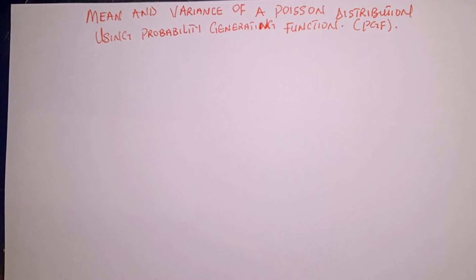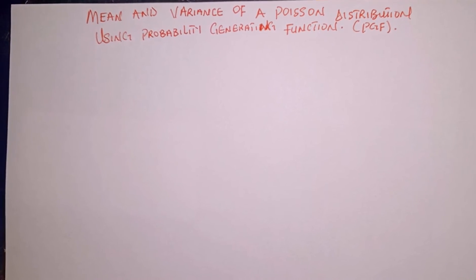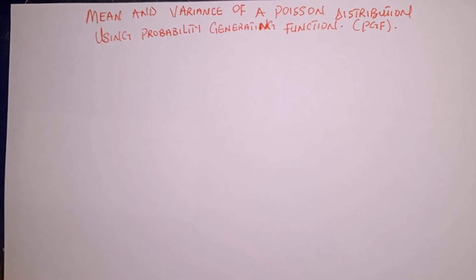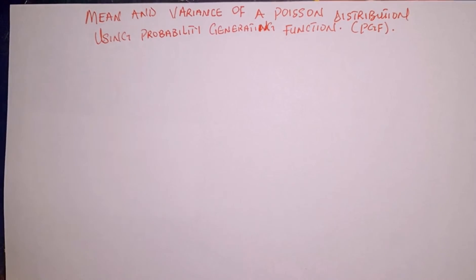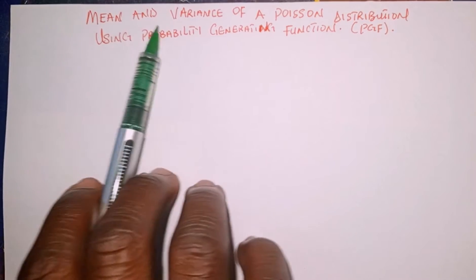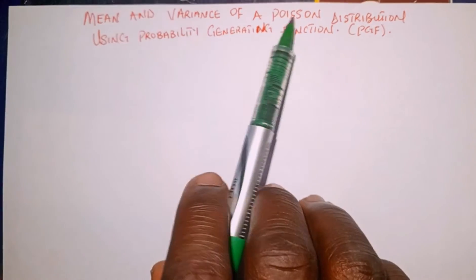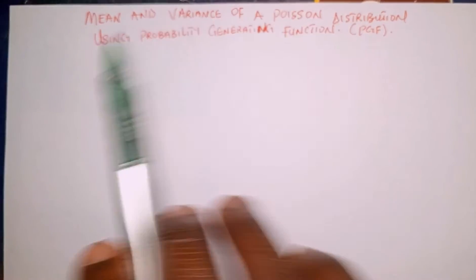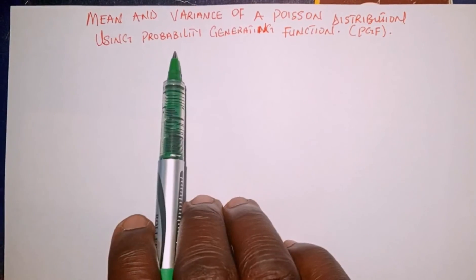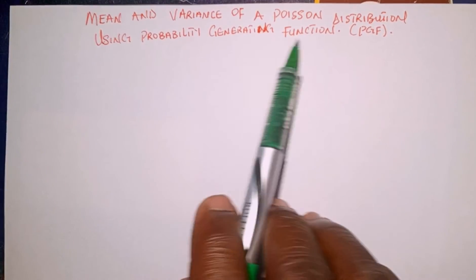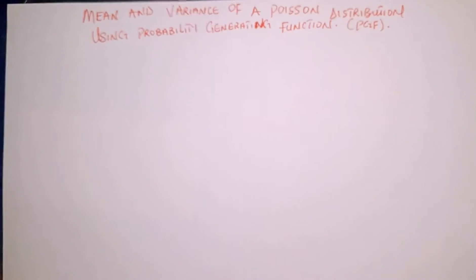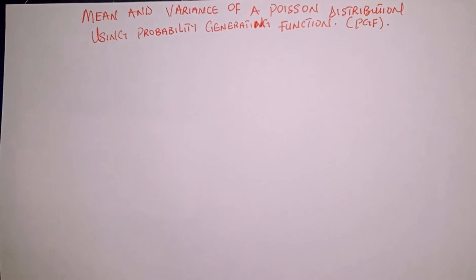Hello everyone, welcome back to Shabez Online Tutorial. In today's tutorial, we're going to learn how to find the mean and the variance of a Poisson distribution using the probability generating function. So let's get started.